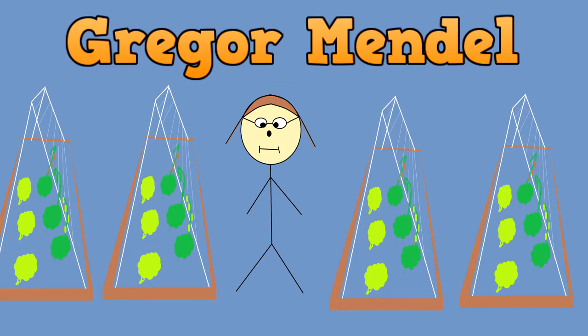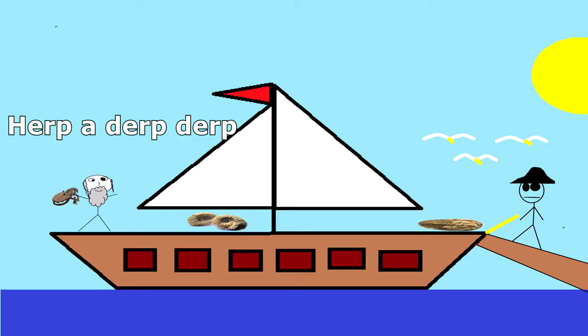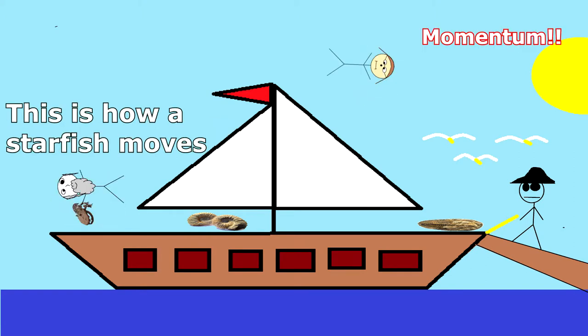Building upon award-winning evolutionary Charles Darwin, who proposed that organisms adapt to their environments over time, Gregor Mendel proposed a theory that helped explain how this happened.